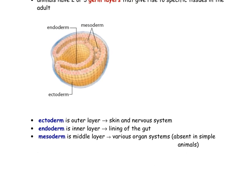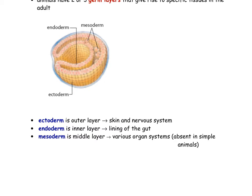The ectoderm is the outer layer — think about what our outer layer is: our skin, along with the nervous system. The endoderm is the inner layer — think about the lining of your gut, like your stomach or your intestines. The mesoderm, which not all organisms have, is the middle layer, comprising various organ systems and that space in between, or body cavity. These body layers are one way of describing and characterizing the members of Kingdom Animalia.